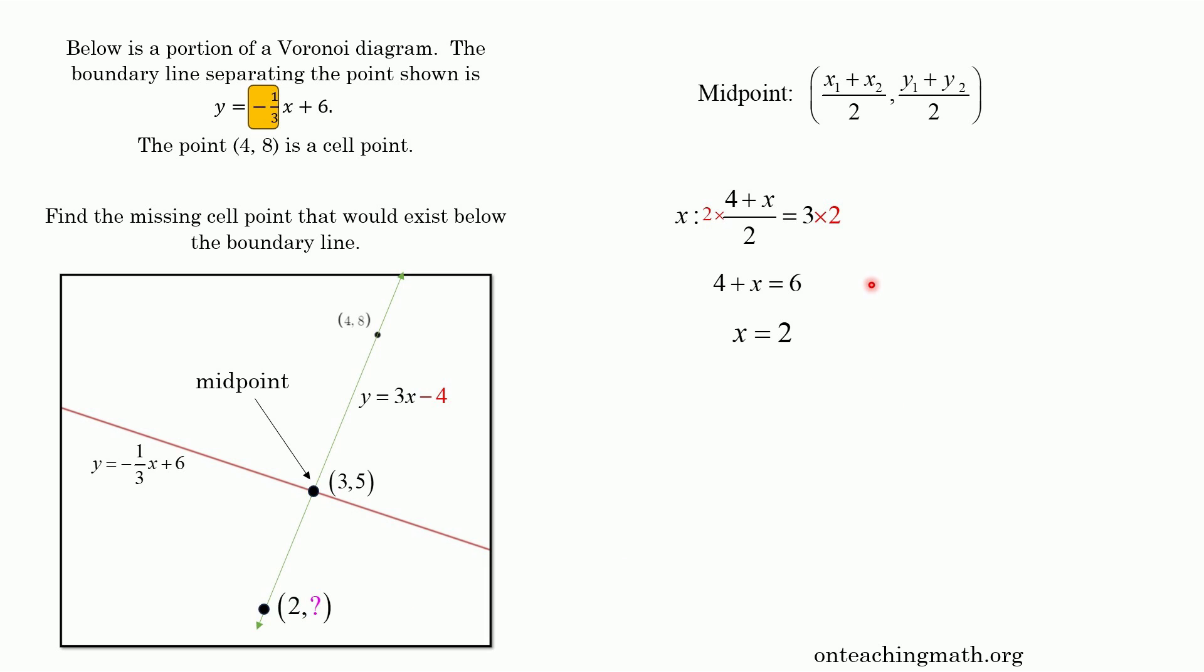All right, so now doing the same thing with the y, 8 plus the thing I don't know. So 8 plus the thing I don't know divided by 2 is 5. That's just plugging everything into the formula once again, right? So solving this, multiply both sides by 2, subtract 8. Turns out y is also 2. So my coordinate where these two cross is 2, 2. Hey, that's pretty cool.